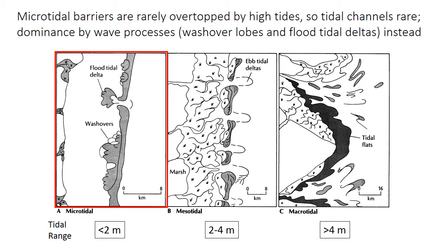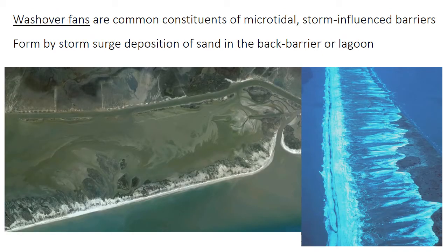On microtidal coastlines, the islands are rarely overtopped by high tides. Only a small volume of water needs to be moved in and out of the lagoon, so tidal channels are few and far between. Wave processes like storm washover lobes and flood tidal deltas dominate instead. Washover lobes are also an important depositional process on barrier islands, especially on these microtidal islands where storms are the dominant sediment transport process.